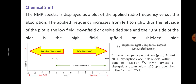Almost all hydrogen absorption occurs downfield within 10 parts per million with reference to tetramethylsilane. For C13 NMR, almost all absorption occurs within 220 parts per million downfield of the carbon atom in TMS.